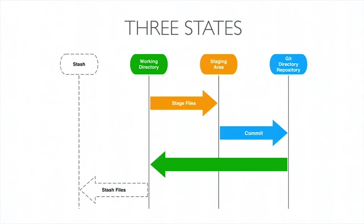Git only has three states — those states refer to the state a file can be in. You've got your working directory, commonly called the working tree. This is where all your files are — typically Drupal root if that's what you're version controlling. Everything in that folder and its children gets version controlled unless you add an ignore file. An example of why you'd want to ignore something: the files folder in Drupal — you don't version control that because it's user content, not code.